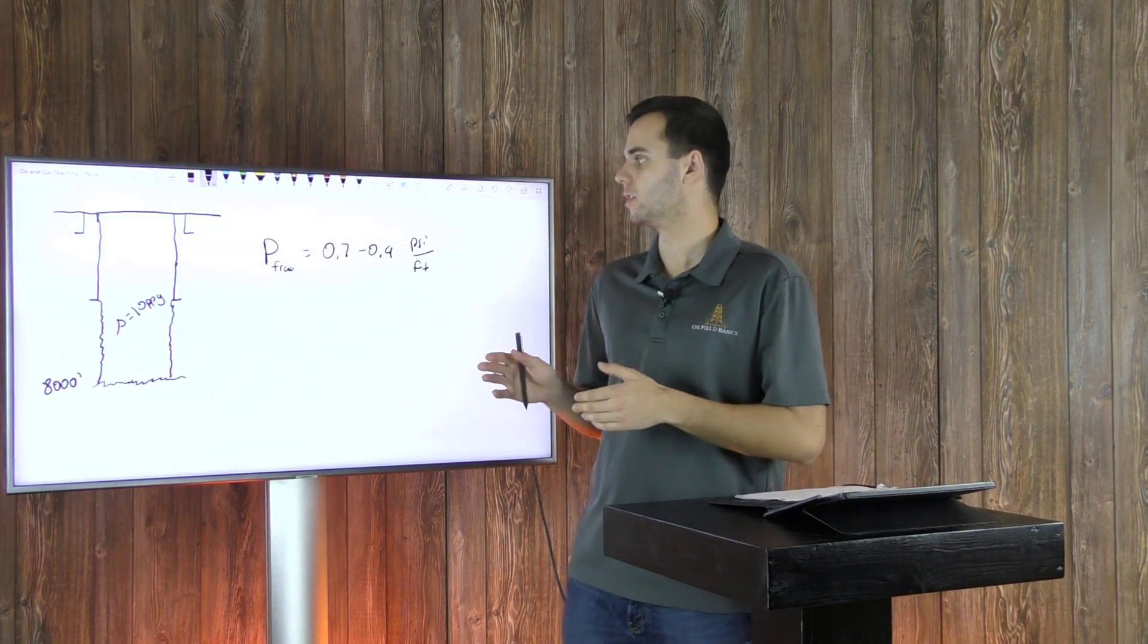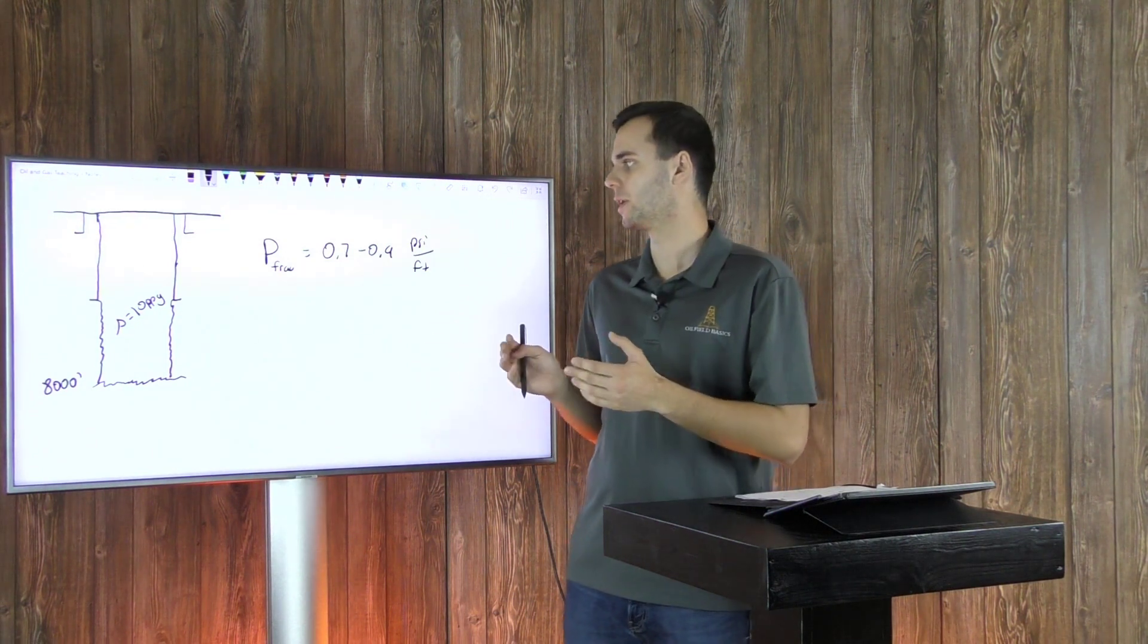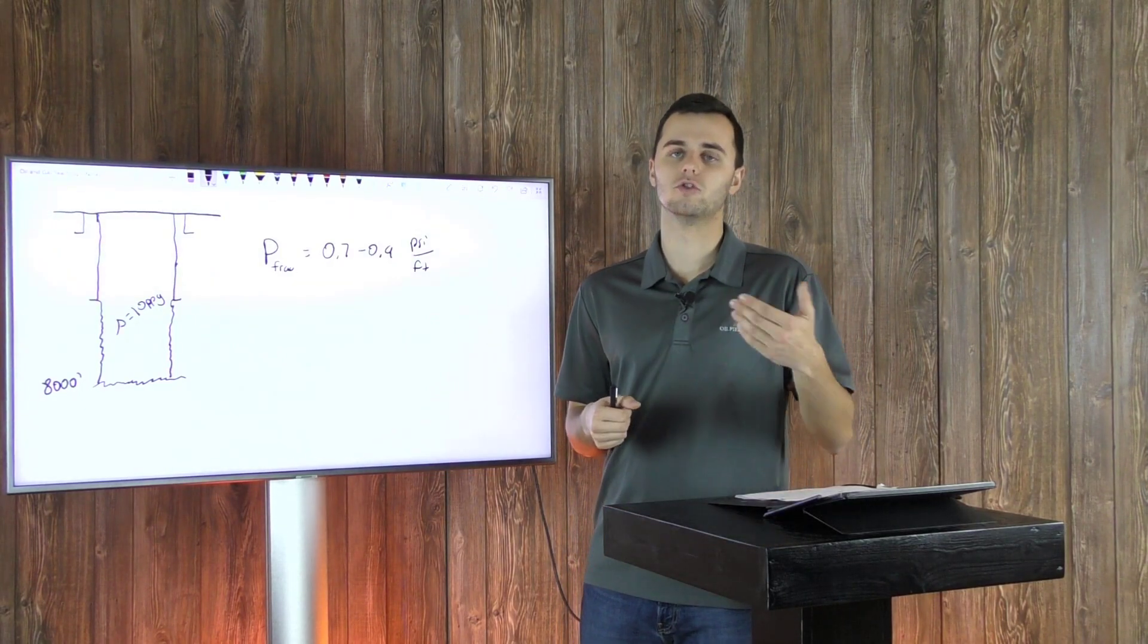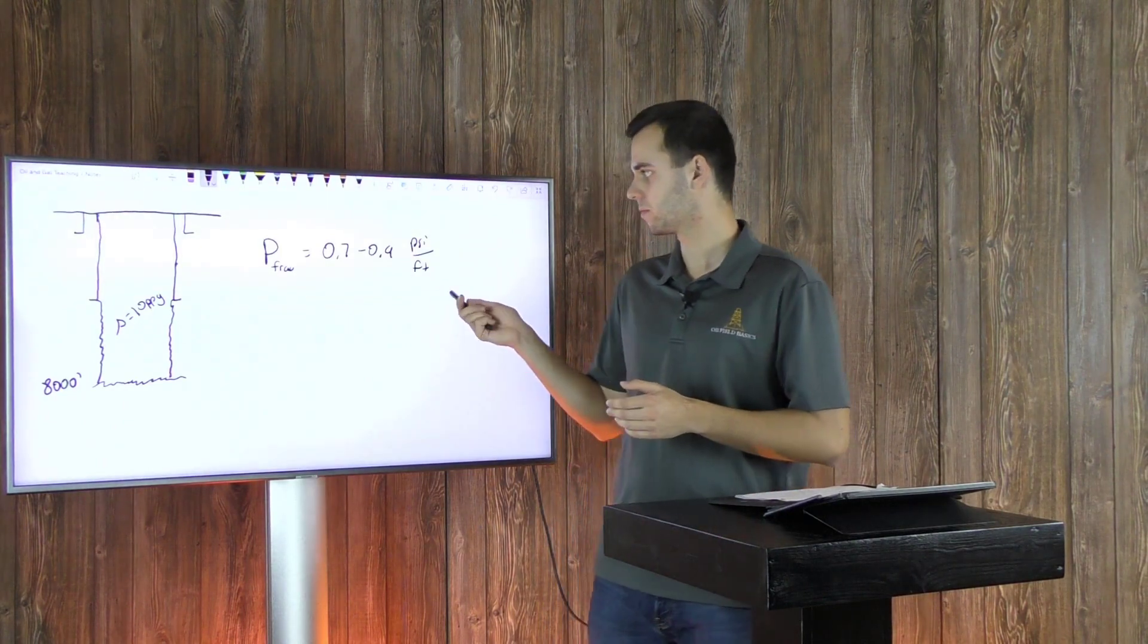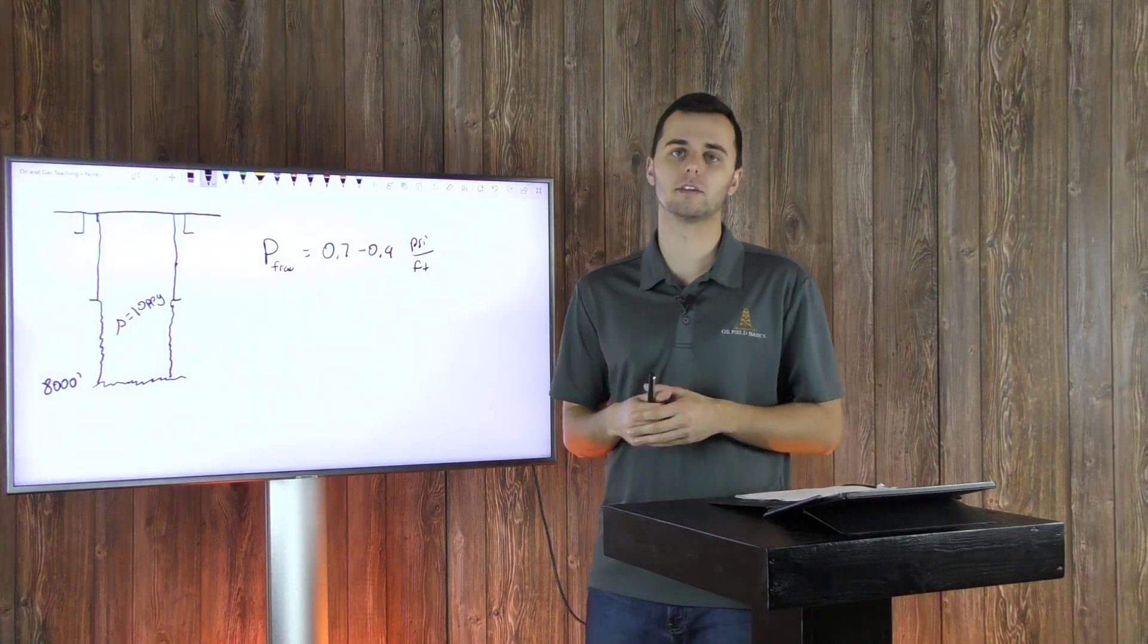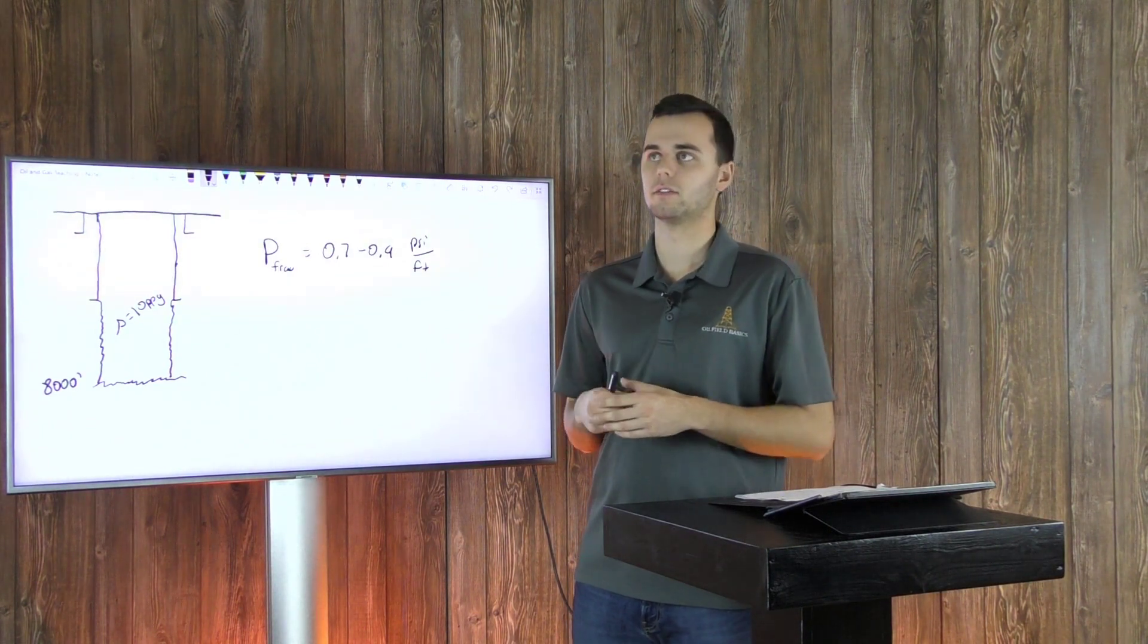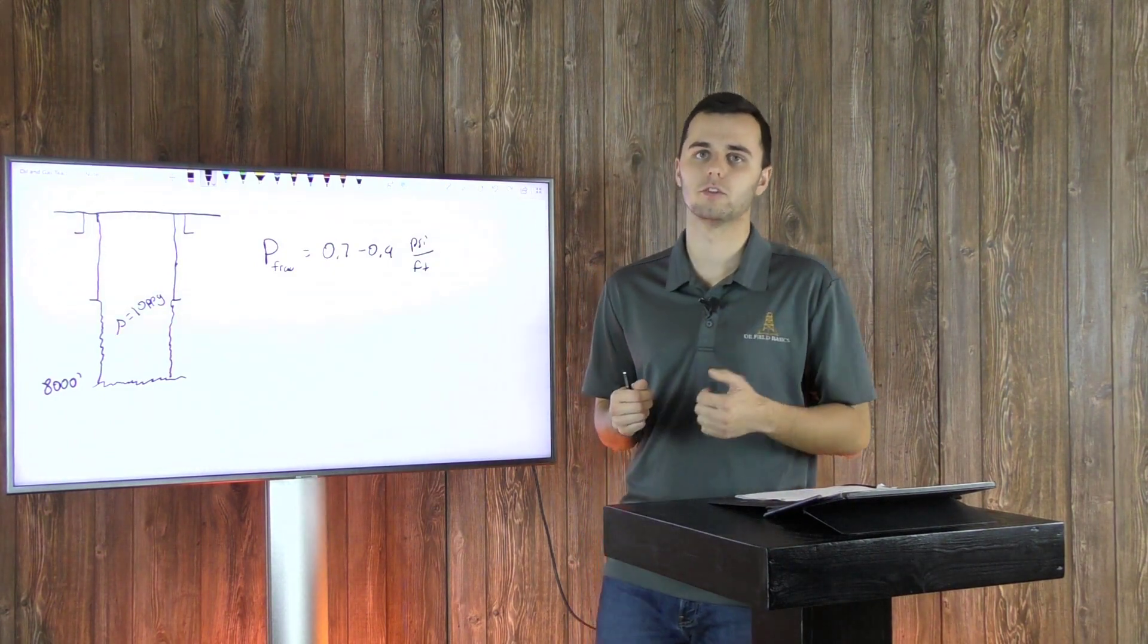So now on the board, I've written up your fracture pressure gradient of around a range of 0.7 to 0.9. This is commonly seen. It depends, again, on the formation, the type of location you're drilling in, your rock type. And so today we'll be using 0.9 psi per foot, which is best case scenario, because that'll give you the greatest amount of pressure and allow you to weigh up on your mud and still not fracture your formation up to a certain point. So now let's figure out what that pressure must be.